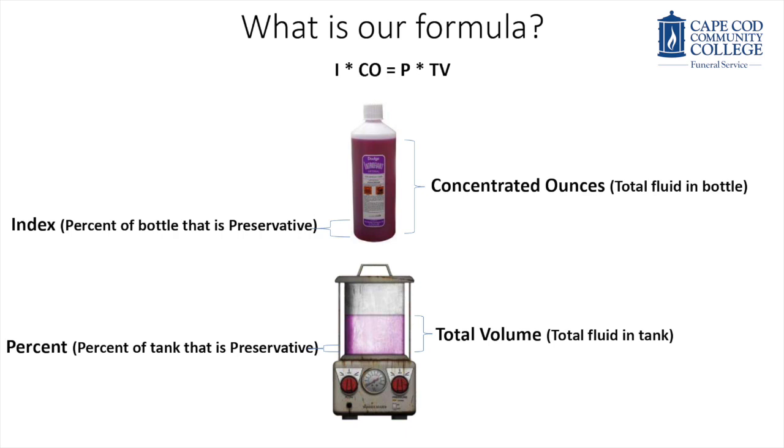The left side of the equal sign in our equation equals the bottles, all of the arterial chemicals, their quantity and their percentage of formalin. The right side is everything in the tank, the percentage of formalin in the tank by the amount of fluid in that tank.